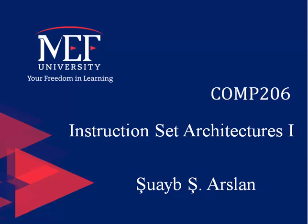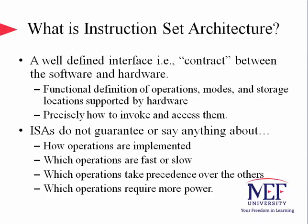Before we talk about ISAs, let us remember the basic computer operation, which involved three basic steps: fetch, decode, and execute cycles. In addition, there were also locating operands, loading, and storing data — the fundamentals of the Von Neumann model. An unavoidable element of the Von Neumann model was the program counter, which pointed to the next instruction after executing the current one. So what is an instruction set architecture? It is a well-defined interface — a contract between software and hardware. ISAs define the functionalities, operations, modes, and storage locations supported by the hardware.